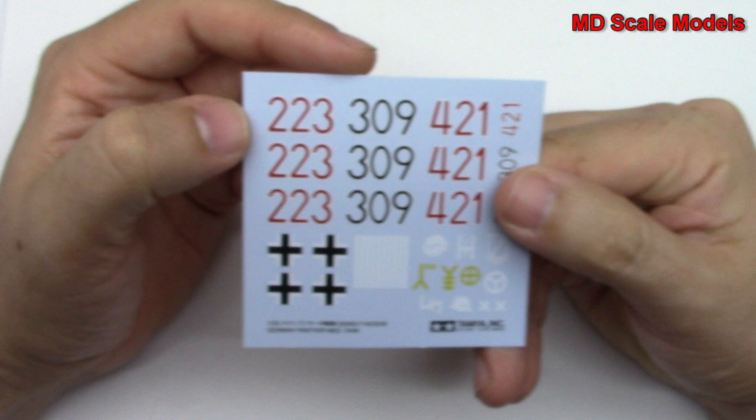Here are our decals. Not really decals for a tank. And then here are the tracks. Nicely molded. Soft, flexible.